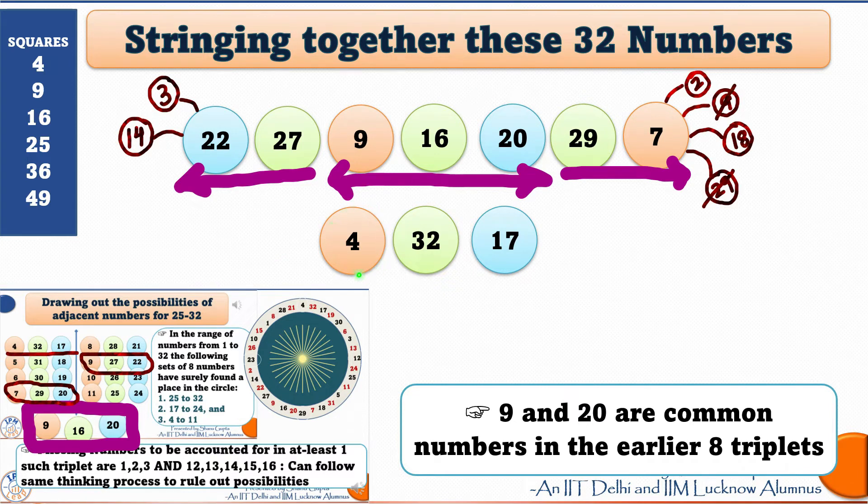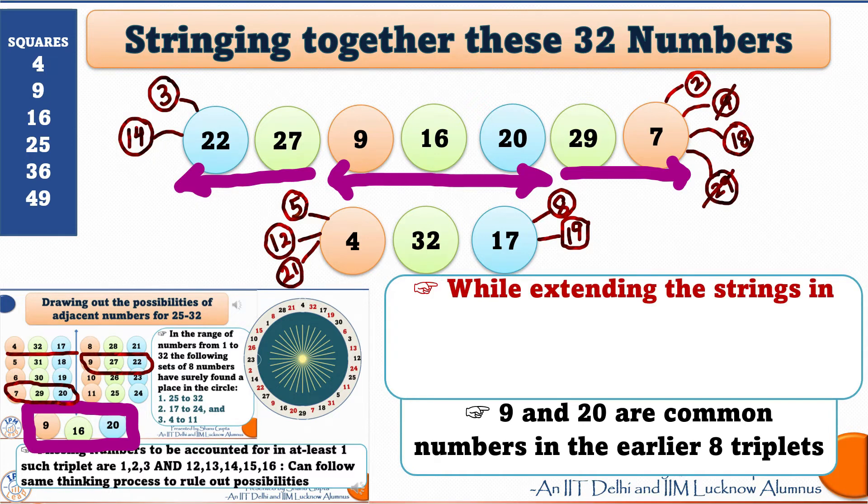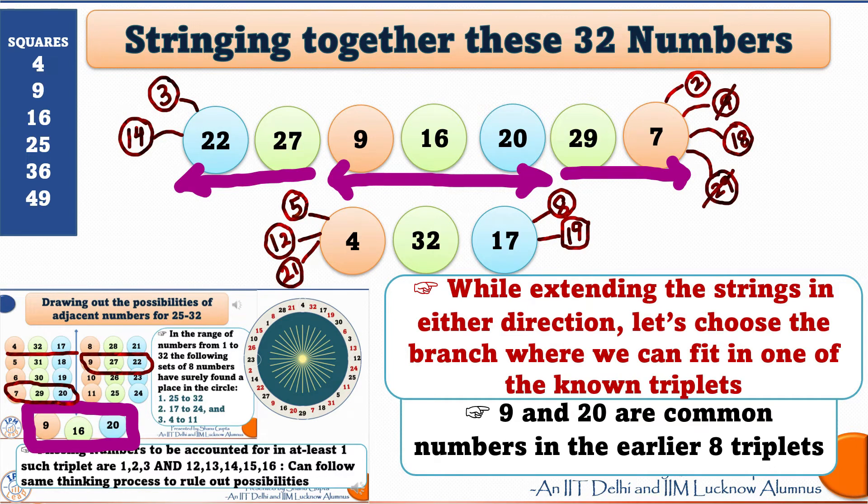On the left of the string, we can have numbers like 5 or 12 or 21. And towards the right of the string, we can have numbers like 8 or 19. Now, onwards, I am going to follow only one rule. While extending the strings in either direction, let us choose the branch where we can fit in one of the known triplets. One of the 9 known triplets.